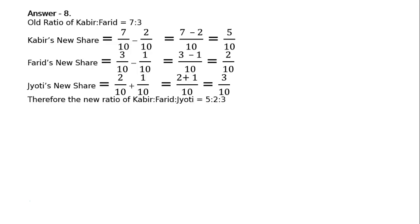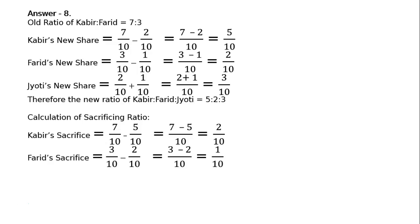Now we have to find out sacrificing ratio. Calculation of sacrificing ratio. The formula is: Kabir's sacrifice, old minus new, 7 upon 10 minus 5 upon 10 is equal to 7 minus 5 upon 10 is equal to 2 by 10. Farid's sacrifice is equal to 3 upon 10 minus 2 upon 10 is equal to LCM 10, 3 minus 2 is equal to 1 by 10. Therefore the sacrificing ratio of Kabir is to Farid is equal to 2 is to 1. And this is the sacrificing ratio.